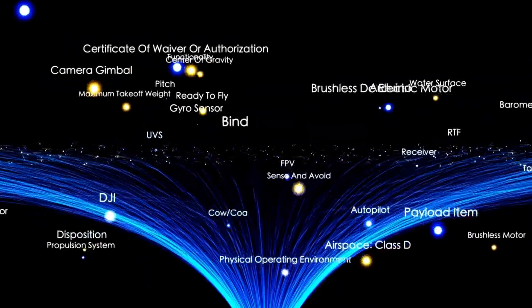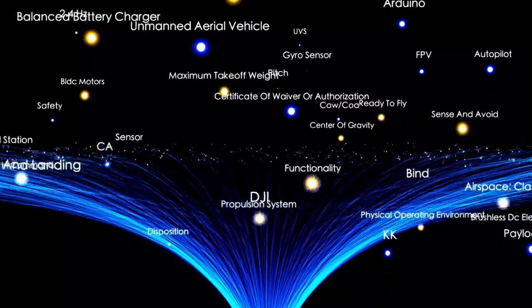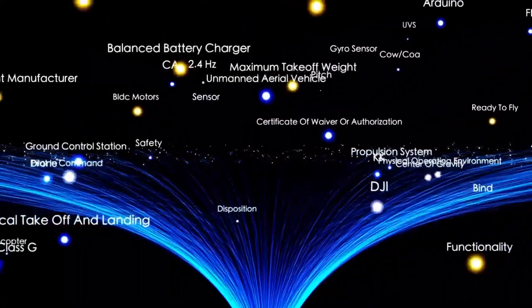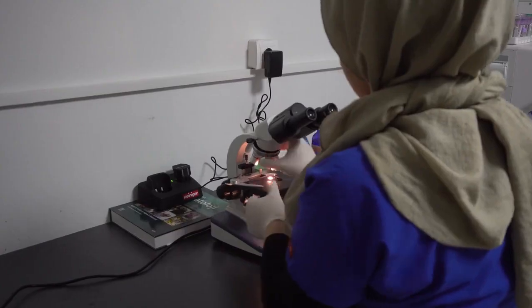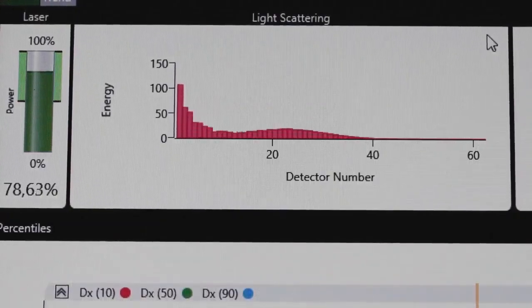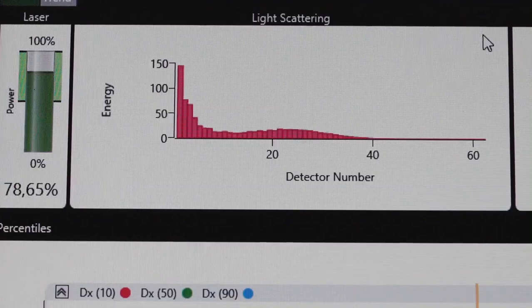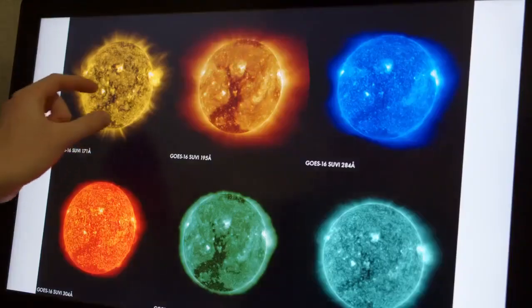To study these phenomena, scientists use advanced tools like photometry and spectroscopy. Photometry measures variations in the star's light over time, offering insights into its pulsations, while spectroscopy analyzes the light at different wavelengths, revealing details about its temperature and motion. Together, these methods create a comprehensive picture of Betelgeuse's behavior, shedding light on the processes driving its changes.